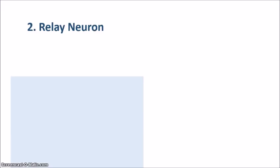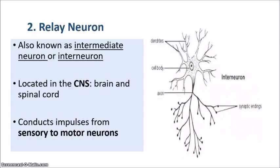Let's look at the next neuron: the relay neuron. Relay neurons are located in the CNS, consisting of the brain and the spinal cord. Another name for the relay neuron is the intermediate neuron or interneuron — these terms all mean the same thing. Relay neurons act as connector neurons, connecting the sensory neuron to the motor neuron. They conduct impulses received from sensory neurons and send them to motor neurons. These neurons are mostly a cell body with dendrites branching out — they don't have a long axon or a dendron, just a very short axon.